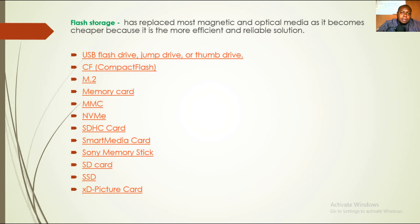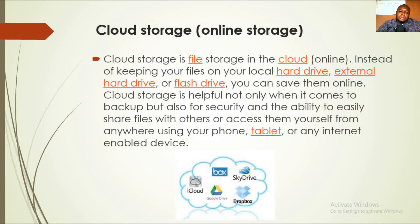Flash storage has replaced most magnetic and optical media as it has become cheaper, more efficient, and reliable. That's why you can have one terabyte of storage in a small box, and a 32-gigabyte flash drive in a small disk, because it uses flash storage technology. Examples include USB flash drives, compact flash, memory cards, smart cards, SD cards, and SSD cards.